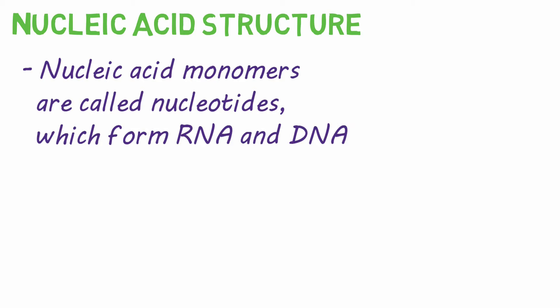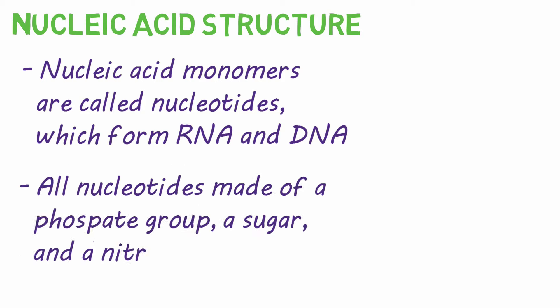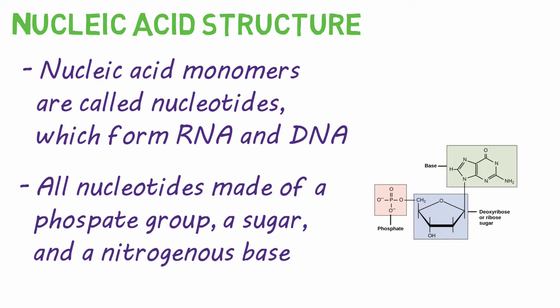Monomers of nucleic acids are called nucleotides — the basic units that bond together to form RNA and DNA. All nucleotides are made up of three main components: a phosphate group, a sugar, and a nitrogenous base. In RNA and DNA, the phosphate group is the same, but they have slightly different sugars.